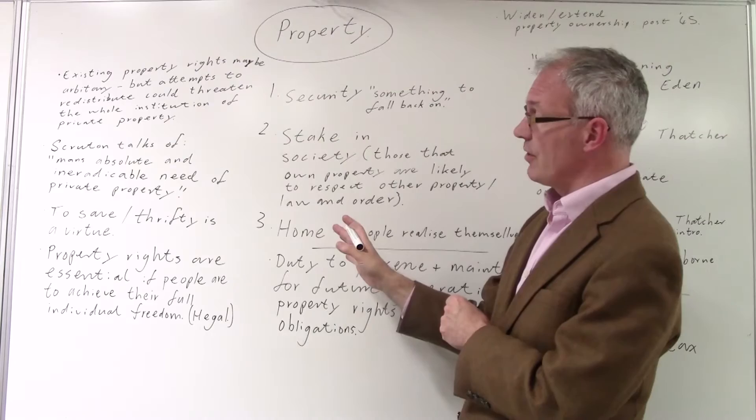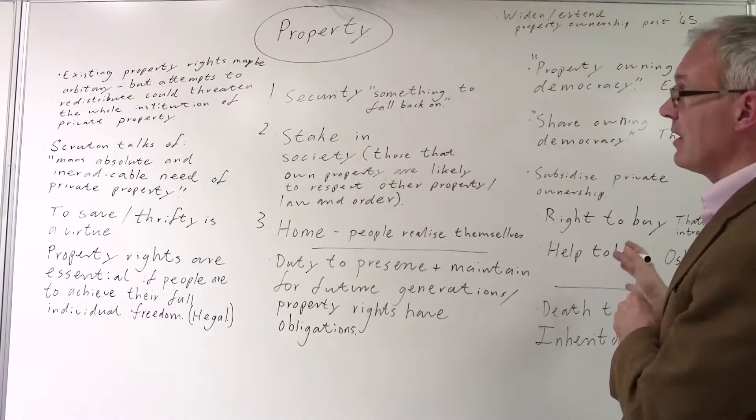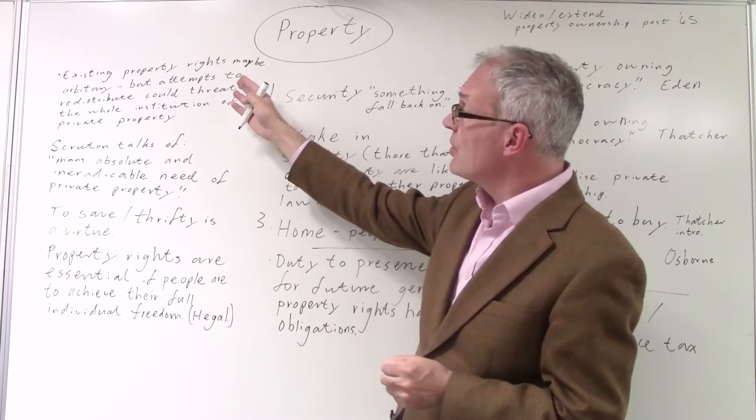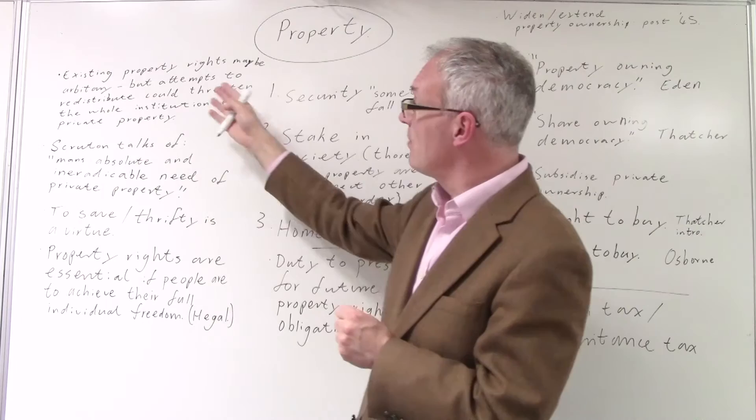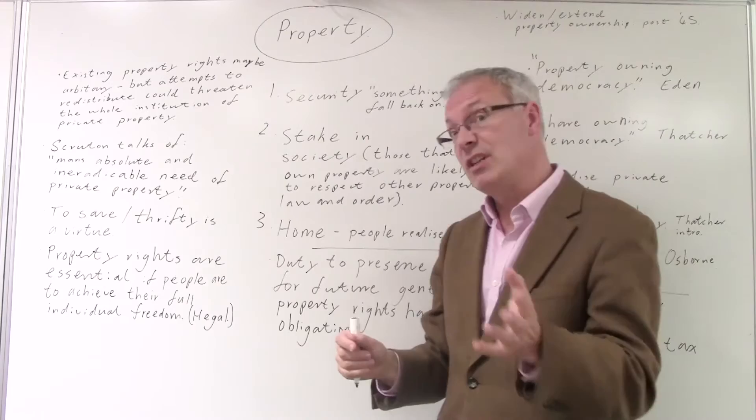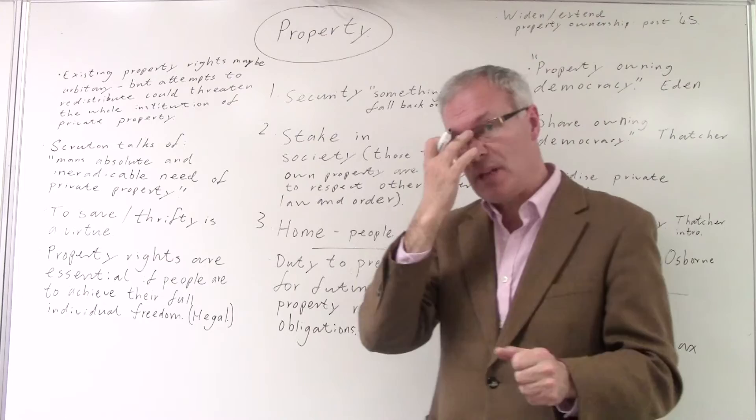The conservative view of property and policy implications. For many conservatives, property rights are crucial and are to be defended because they would argue that attempts to redistribute, even though the distribution of property may be arbitrary, could actually threaten the whole institution of private property itself. For many conservatives, of course, in the 18th and into the 19th century, defending land is particularly important. But of course, there are many different forms of property.